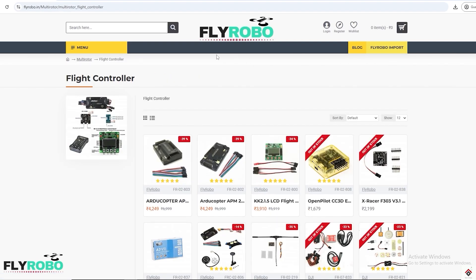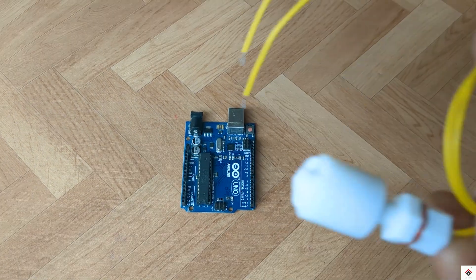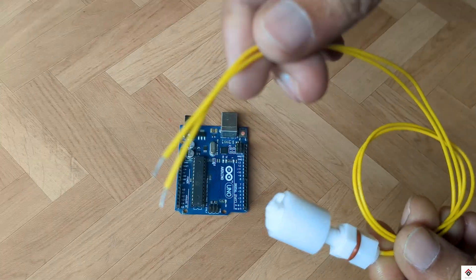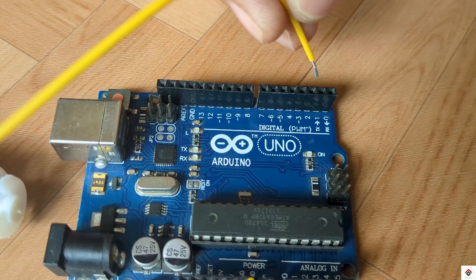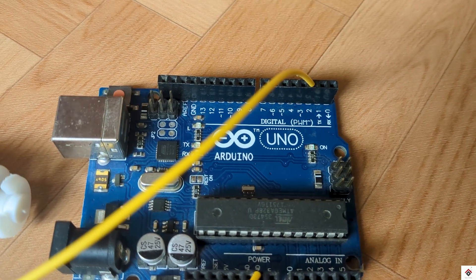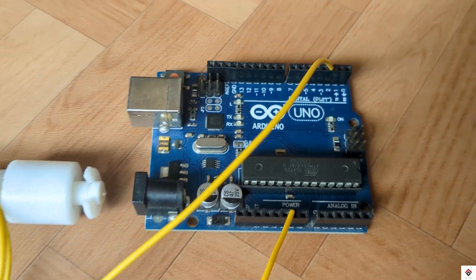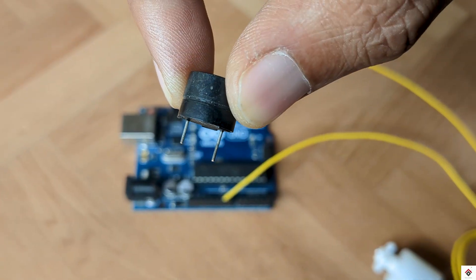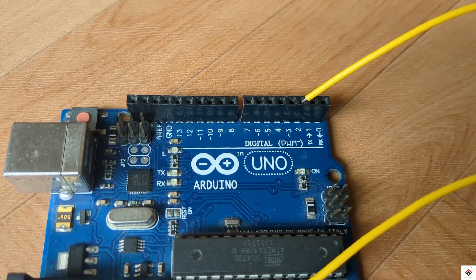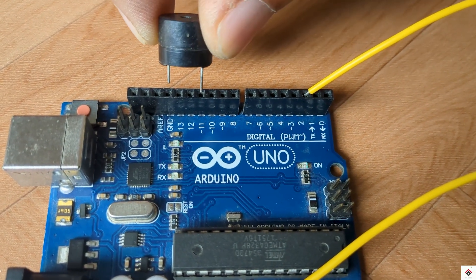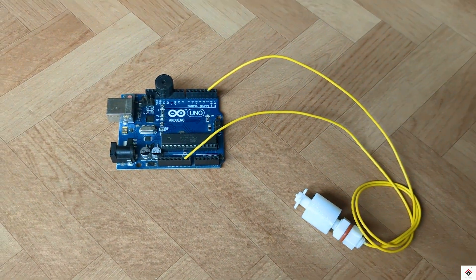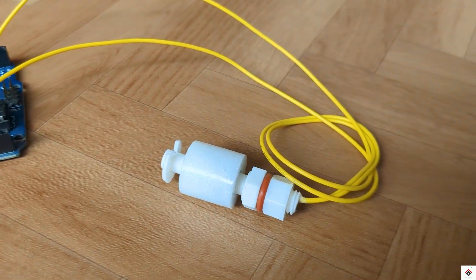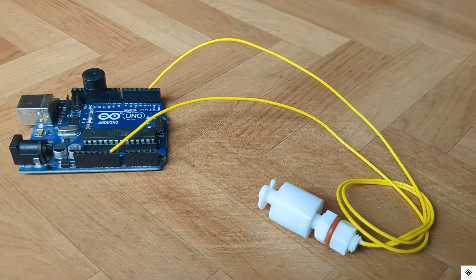Next, on the connections: there are two wires from the sensor—one goes to Arduino ground and the other one to Arduino digital pin 2. For the buzzer, the positive terminal goes to digital pin 11 and negative to ground. That's all the connections. I'll also leave the circuit diagram link in the description box for your reference.